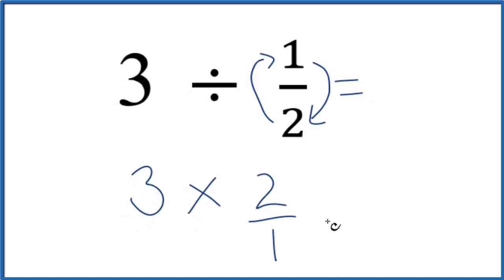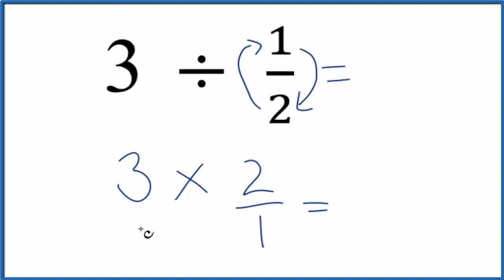So three times two over one. And we can think of three as three over one. It's the same thing as three. We're just dividing by one.